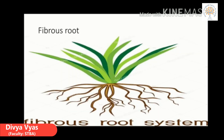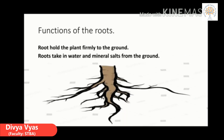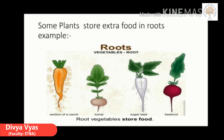The next type is the fibrous root. When a number of roots grow from the end of the stem, they are called fibrous roots. Examples of fibrous roots are onion, grass and rice. Roots hold the plant firmly to the ground and take in water and mineral salts from the ground. Some plants such as turnip, beetroot and carrot store extra food in the roots. These roots that store food are of different colors — carrots can be orange or red, beetroot is purplish red, and radish is white or red.